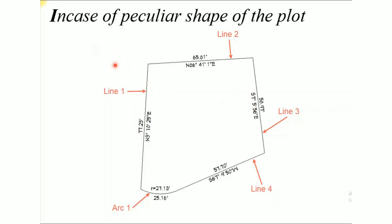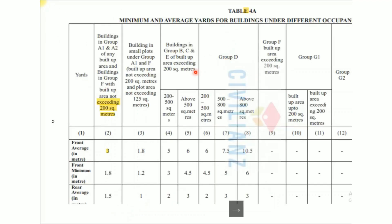In addition, for 2020, in case of a peculiar shape or irregular shape of the plot, we have to take the average. In the front case, the average is 3 m, and the average on the side is 1.8 m. The average is 3 m in front, and 1.8 m on the side.